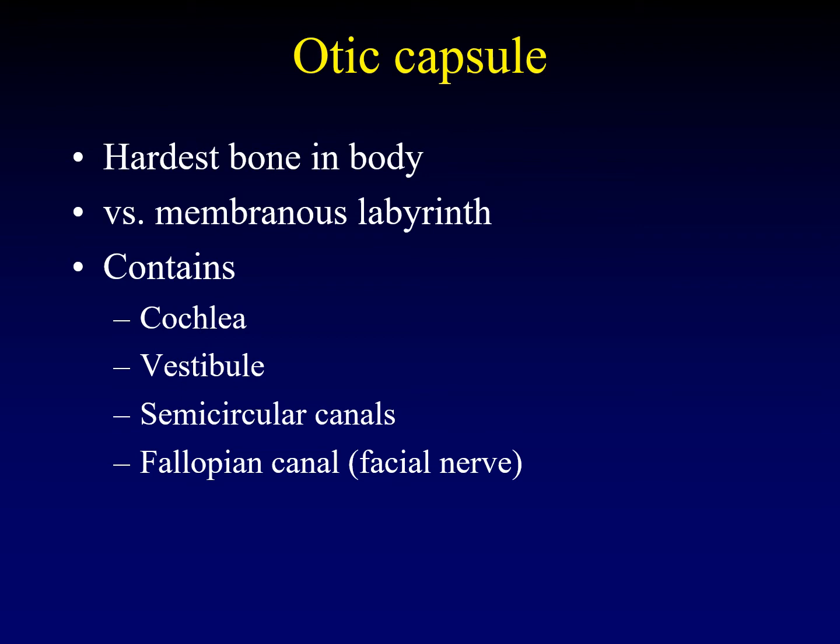The otic capsule contains within it the cochlea, which is that spiral structure spinning up that contains all the hair cells that provide hearing. The vestibule, which is more posterior and is responsible for balance. The semicircular canals that come off of the vestibule, and the fallopian canal, which is what we call the bony canal that contains the petrous segments of the facial nerve.